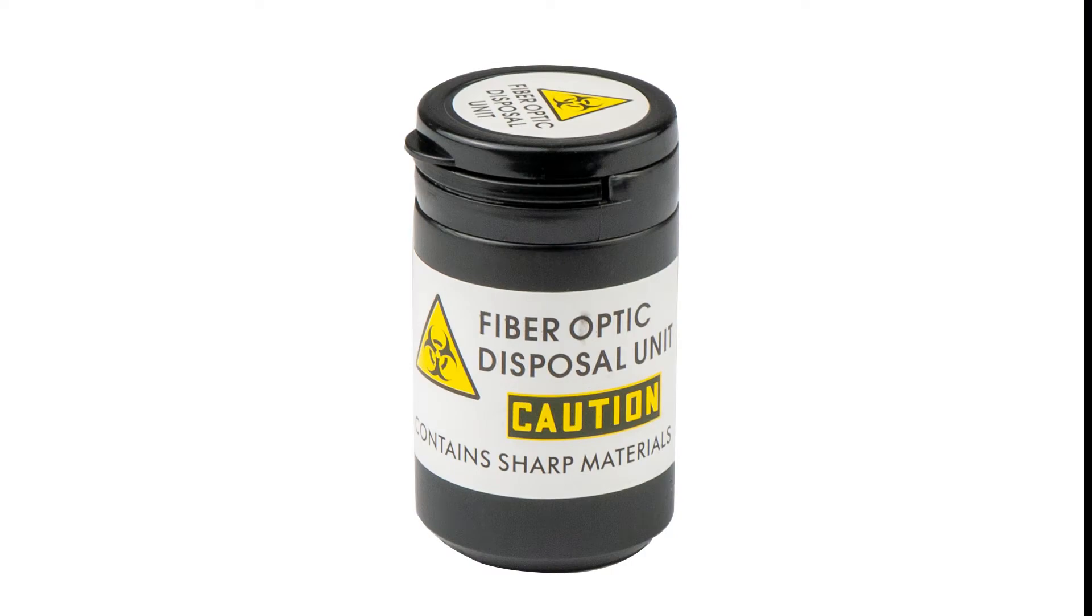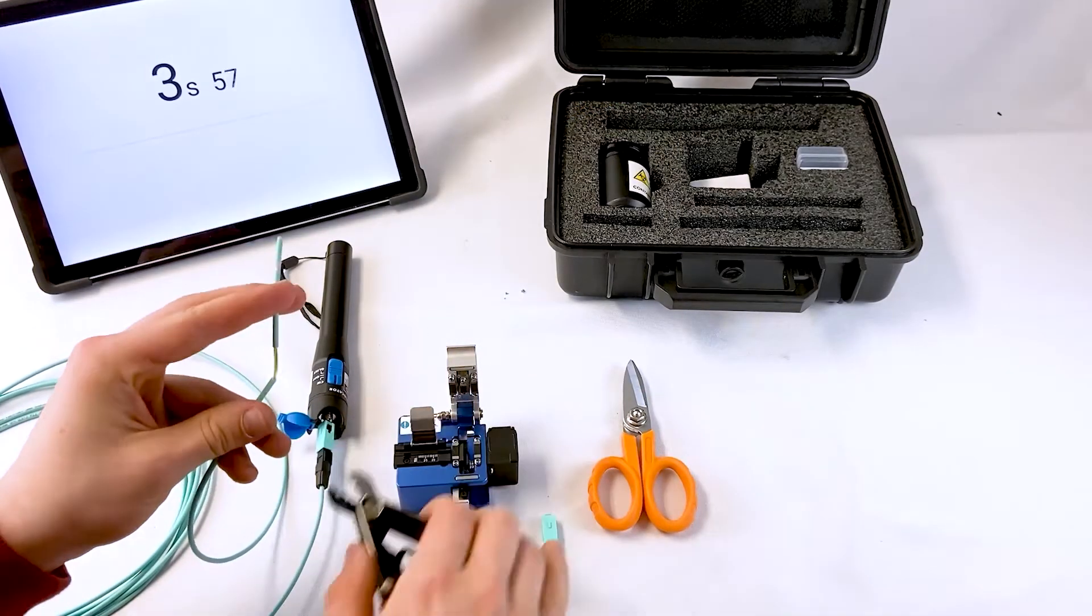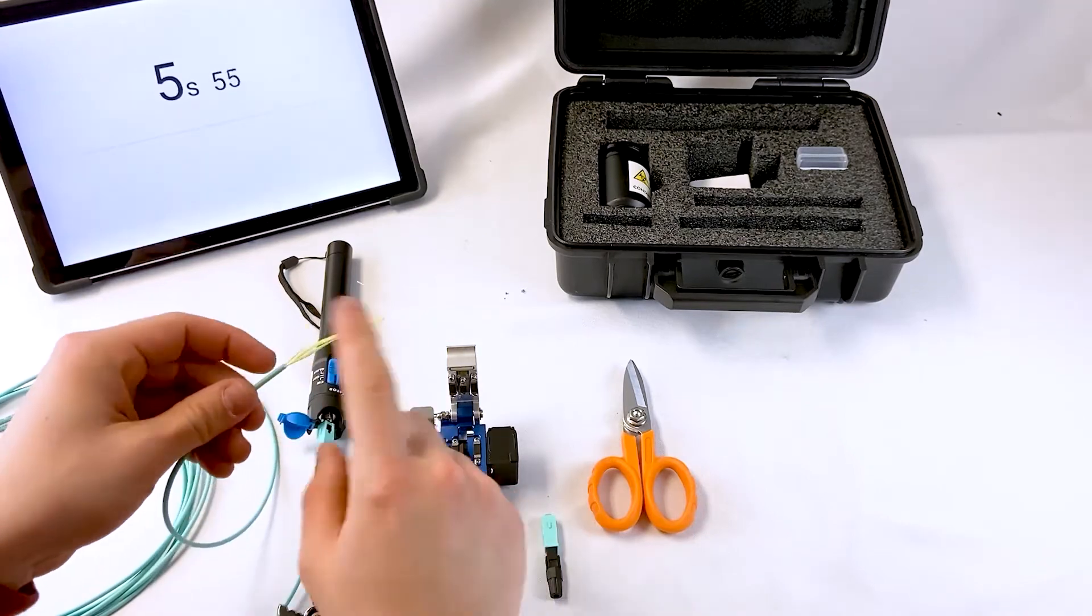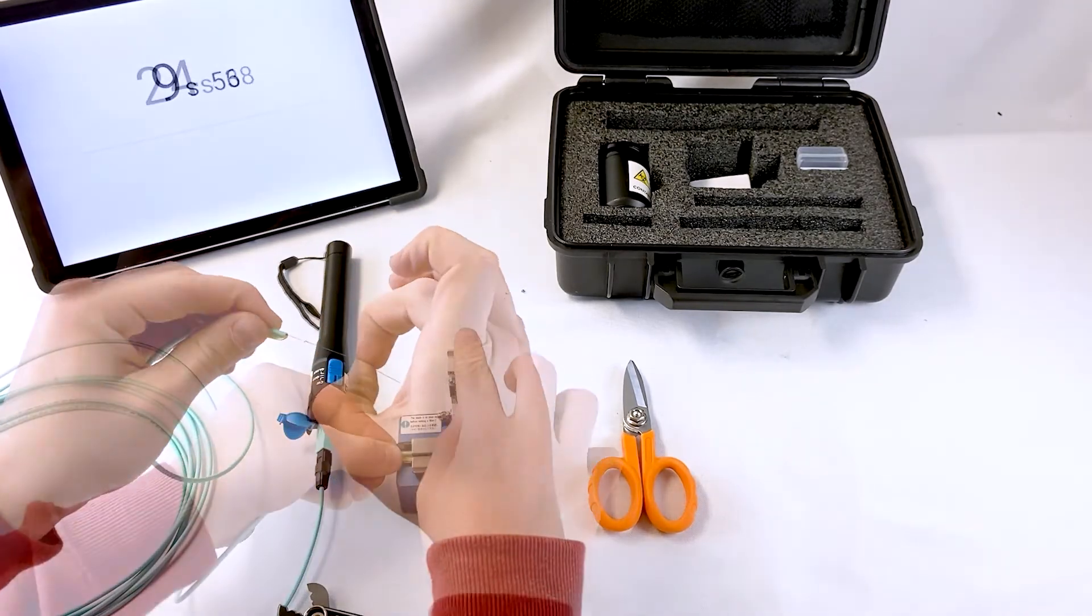Fiber Optic Disposal Unit. While Clearline SSF fibers are safer to handle than traditional fibers due to our polymer coating, you should still carefully dispose of all offcuts.